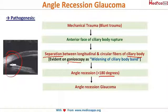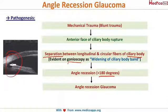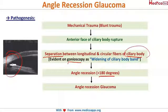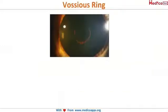When the angle recession is greater than 180 degrees, it will result in angle recession glaucoma. The separation between the longitudinal and circular fibers of the ciliary body causes this angle recession, and if it exceeds 180 degrees, the patient lands up with angle recession glaucoma.